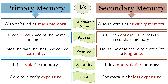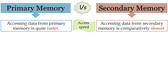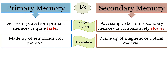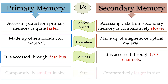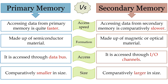Primary memory is comparatively expensive compared to secondary memory. Accessing data from primary memory is quite faster, however accessing data from secondary memory is comparatively slower. Primary memory is made up of semiconductor material whereas secondary memory is made up of magnetic or optical material. Primary memory is accessed through data bus, however secondary memory is accessed through I/O channels. The primary memory is comparatively smaller in size, however the secondary memory is comparatively larger in size.